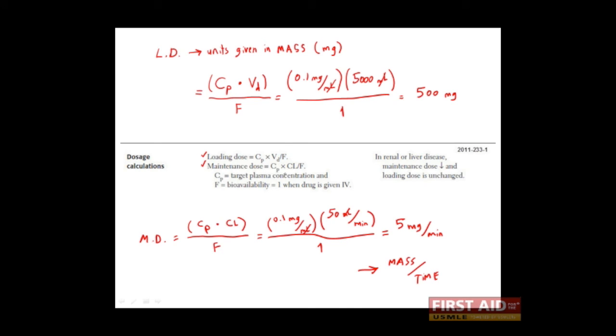So in summary, to maintain a plasma drug concentration of 0.1 milligrams per milliliter with a clearance of 50 milliliters per minute, we need to give our patient 5 milligrams of the drug every minute. And we can do this using an IV drip.